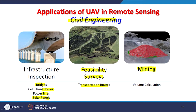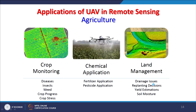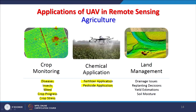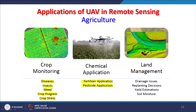Mining has also started using UAVs for volume calculations and other related operations. For agriculture, crop monitoring can identify problems in plants so that targeted pesticides can be applied — saving a lot of pesticide. Crop disease, insects, weeds, crop progress, and crop stress can all be studied depending on the payloads used. Chemical applications, fertilizer applications, and pesticide applications in large agricultural fields are also possible. Land management for drainage issues, replanting decisions, yield estimations, and soil moisture surveys can also be done.